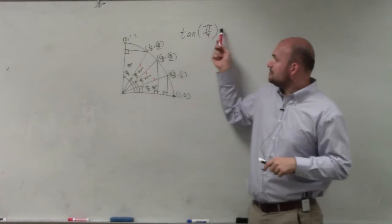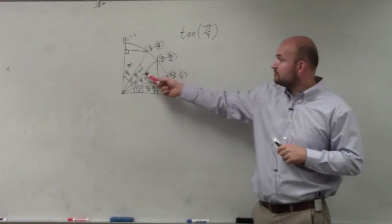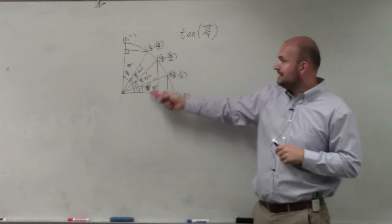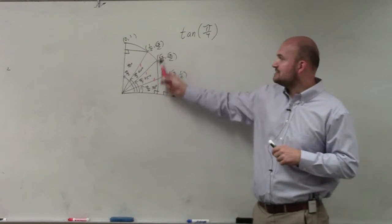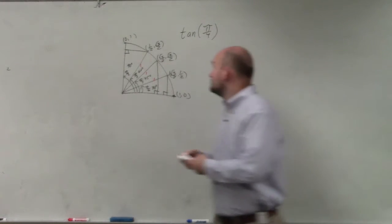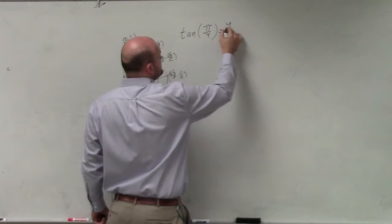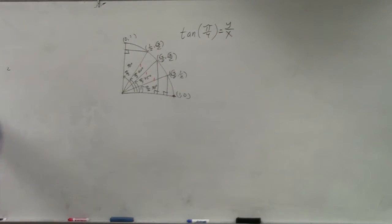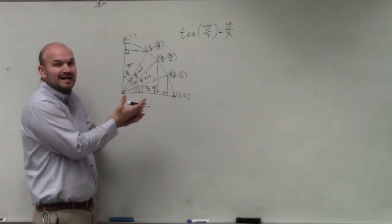But if you look at this, tangent of pi over 4 is a 45 degree triangle. And if you look at when the radius is 1, the adjacent side is square root of 2 over 2, and the opposite side is square root of 2 over 2. So the tangent is simply also y over x, which is represented over here. So when you have a triangle that has a radius of 1, you can simply just use y and x.